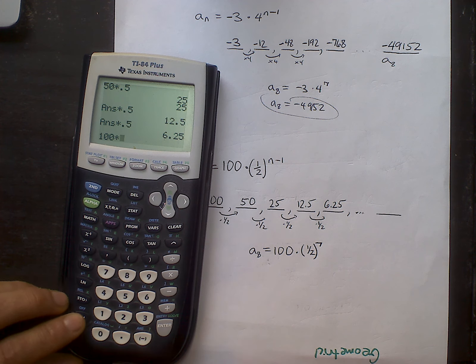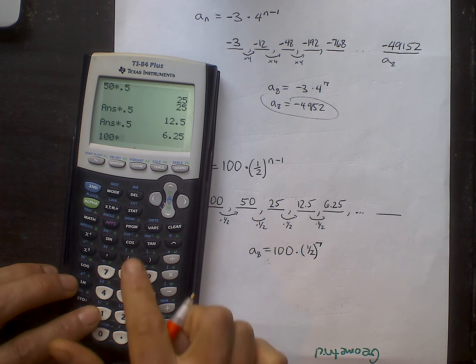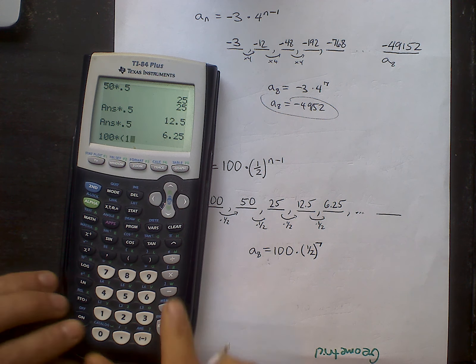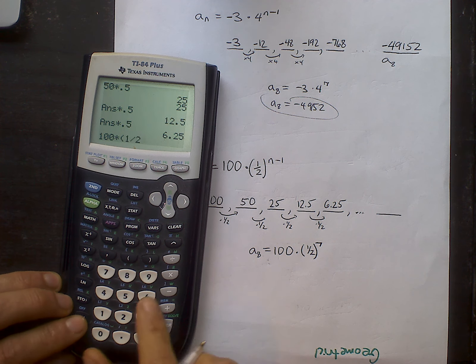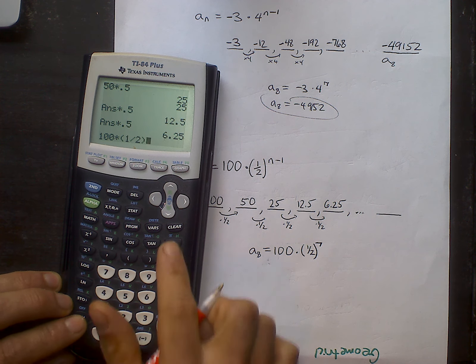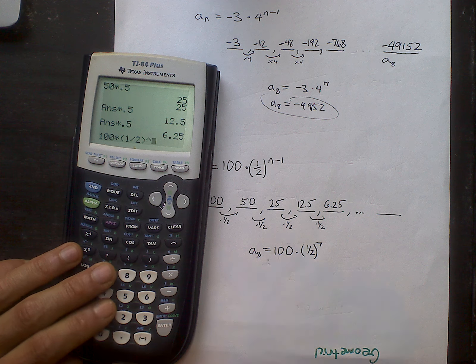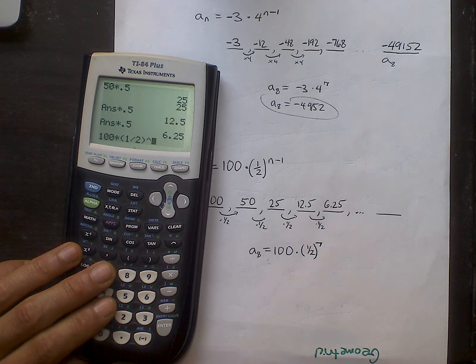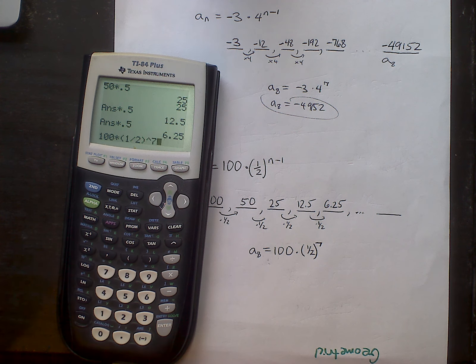Oh, excuse me. 100 times. I'm going to use 1 half. I have to put that in parentheses. 1 divided by 2. Raised to the n minus 1. If you do 8 minus 1, that needs to be in parentheses. So I'll just type a 7 right there.